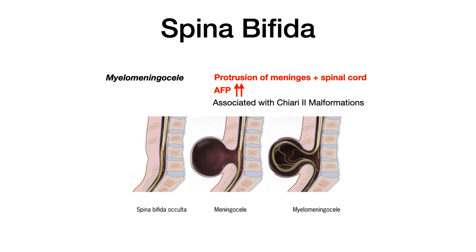Lastly, we have spina bifida with myelomeningocele, which is the most severe type. In myelomeningocele, you see protrusion of both the meninges and the spinal cord. Because there's a hole in the low back, fluid can leak out, so AFP will be increased if measured. What's very important to know for exams is that spina bifida with myelomeningocele is highly associated with Chiari type 2 malformations.